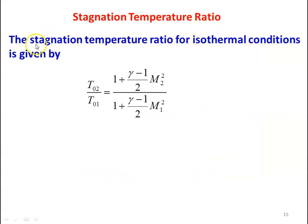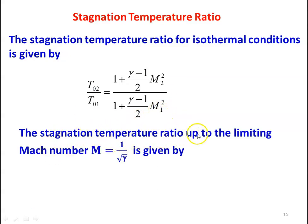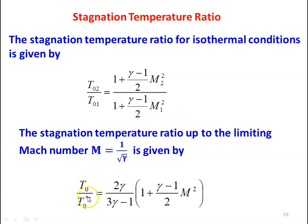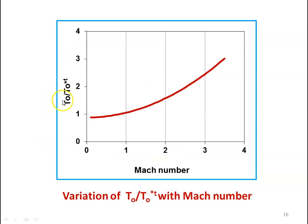The stagnation temperature ratio for isothermal flow is T_O2/T_O1 = [1 + (γ−1)/2 · M2²] / [1 + (γ−1)/2 · M1²]. The stagnation temperature ratio up to the limiting Mach number M = 1/√γ is T_O/T_O*T = (2γ/(3γ−1)) × [1 + (γ−1)/2 · M²]. The variation of stagnation temperature ratio with respect to Mach number is shown for γ = 1.4.